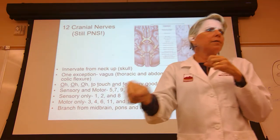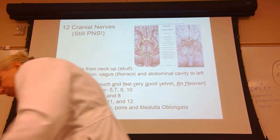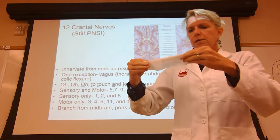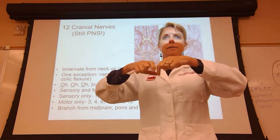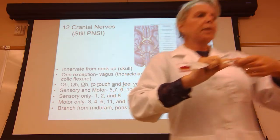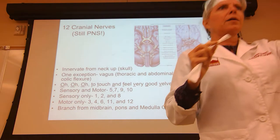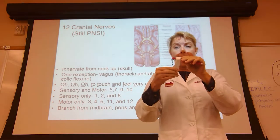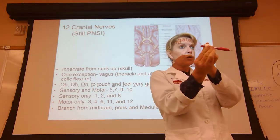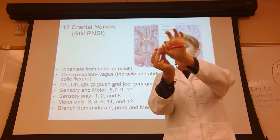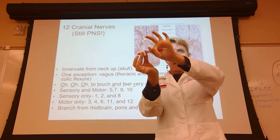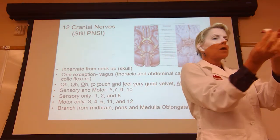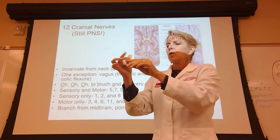If you take a Kim wipe representing a neurolemocyte and wrap it around a pencil representing an axon, you can wrap it many times — and now you start to see white matter. Then you would need another neurolemocyte, and another, and another — just for one axon. Myelination allows action potentials to travel with greater speed.